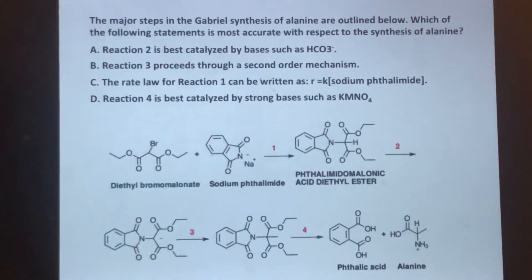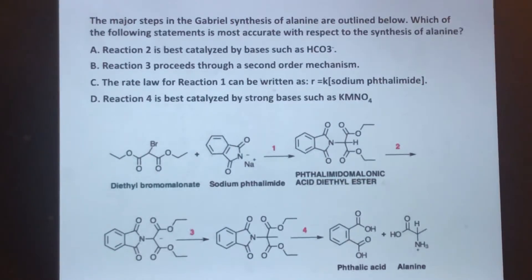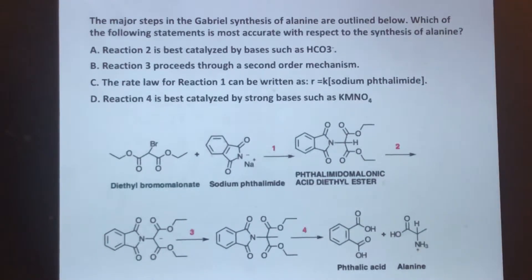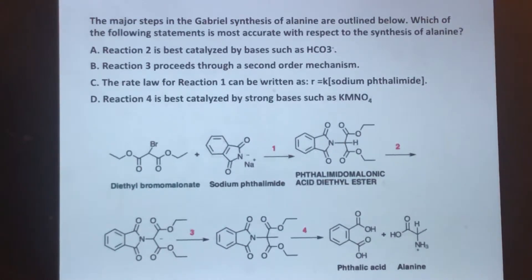The question asks: the major steps in the Gabrielle synthesis of alanine are outlined below — which of the following statements is most accurate with respect to the synthesis of alanine? There are four choices, and each choice focuses on one aspect of the synthesis reaction. Let's start with A and work our way down.